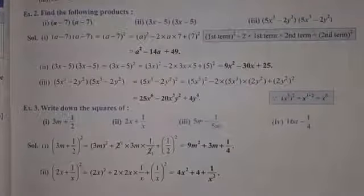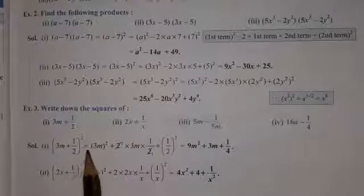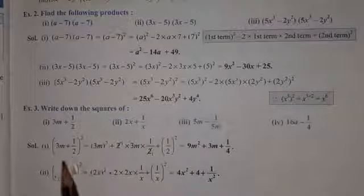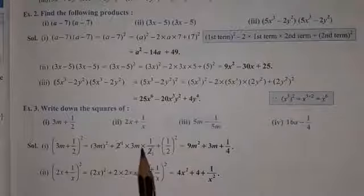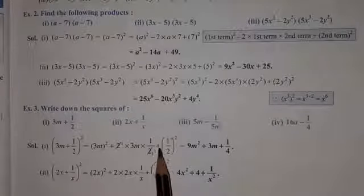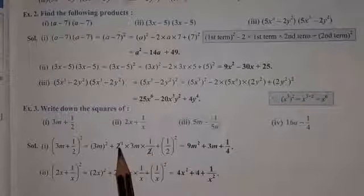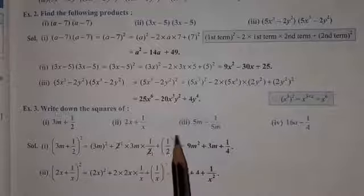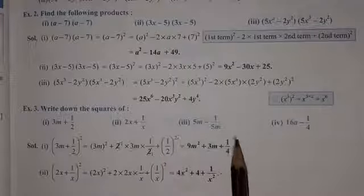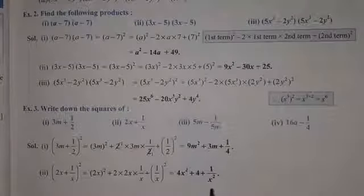Come to the third example. I am going to take the first part: 3m plus 1 upon 2, whole square. So it means: first term square — that is (3m)² — plus double of the product of two terms — 2 into 3m into (1/2) — plus (1/2) square. When we operate: (3m)² gives 9m², the 2 in the denominator and the 2 in the numerator cancel, so we get 3m for the middle term, plus 1/4. So the final answer is 9m² + 3m + 1/4. Now we will move to the next page.